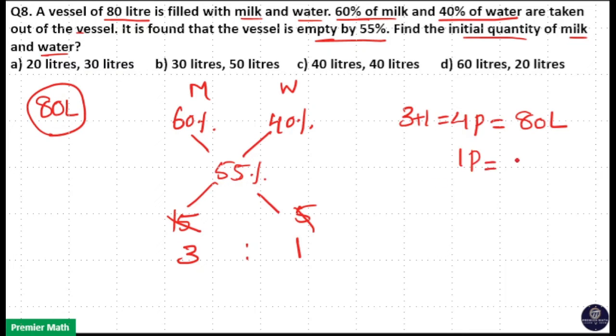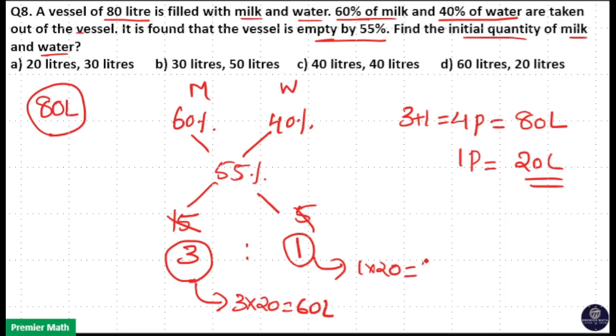So 1 part means 80 by 4 is equal to 20 liter. That means 3 parts is equal to 3 into 20, 60 liter. And 1 part is equal to 1 into 20, 20 liter. So 60 and 20.